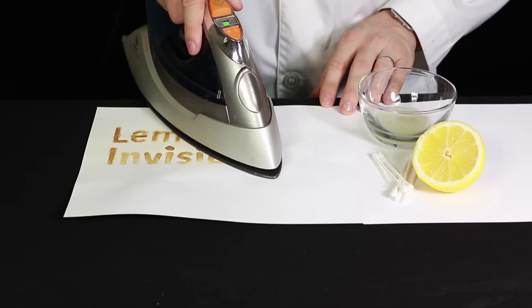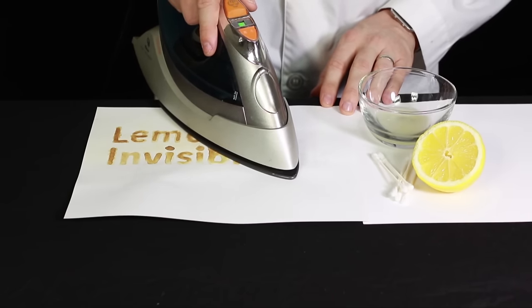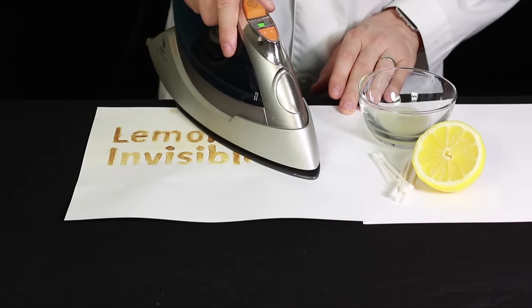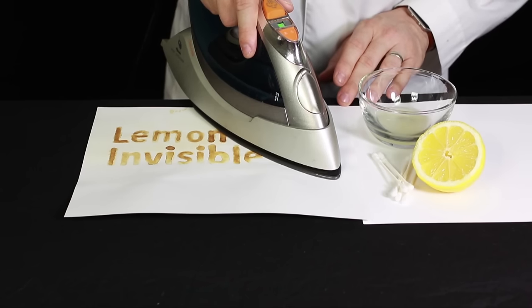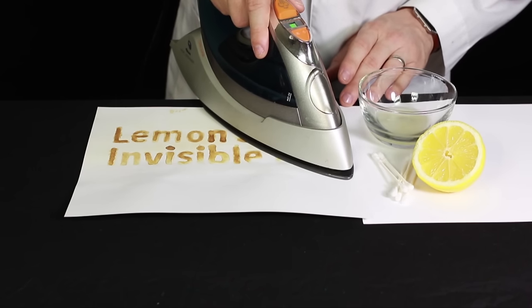Areas painted with the lemon juice will become a dark brown color, revealing your secret message. The reason this works is that the lemon juice actually undergoes an oxidation reaction at a lower temperature than the paper, turning it dark brown and revealing your message.